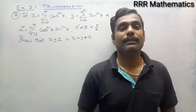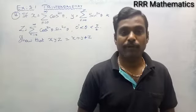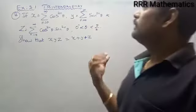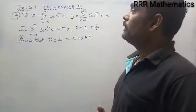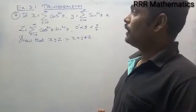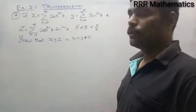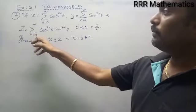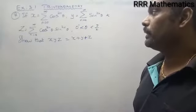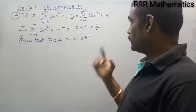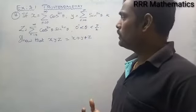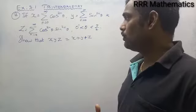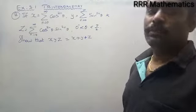Hi my dear students, today we will discuss chapter 3, exercise 3.1, 7th program. If x equals sigma n=0 to infinity cos^(2n) theta, y equals sigma n=0 to infinity sin^(2n) theta, and z equals sigma n=0 to infinity cos^(2n) theta into sin^(2n) theta, where theta lies between 0 to 90 degrees, that is the first quadrant. We want to show that x into y into z equals x plus y plus z.